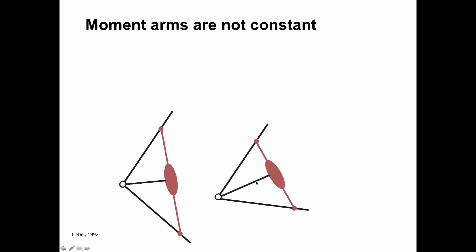One thing I alluded to before was that moment arms are not constant as joint angles change. As the joint moves, the path of the muscle will change. For example, as two segments get closer to each other, the distance from the muscle path to the joint center gets bigger. For different muscles this plays out quite differently, but overall the muscle moment arm will change with joint angle.